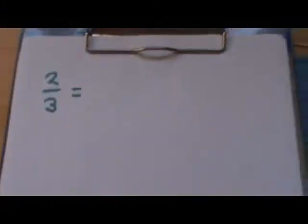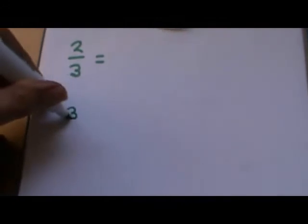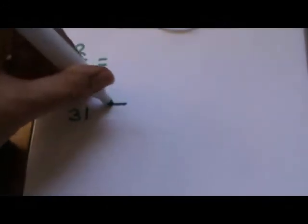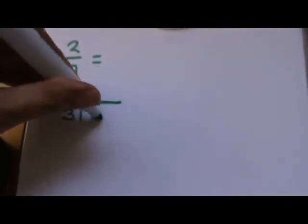Before we go to look at the calculators, let's just do a little sum: two thirds. Let's do that without a calculator first and change it to a decimal. So two thirds means how many threes are there in two?